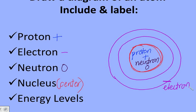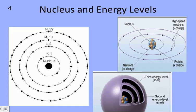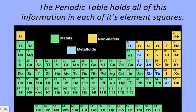How do we keep track of all the different atomic models? How do we know what's in the middle and how many electrons are found on the outside? That's all thanks to our periodic table. The periodic table holds all of this information in one of its element squares, and we're going to continue our discussion talking about how to use that.